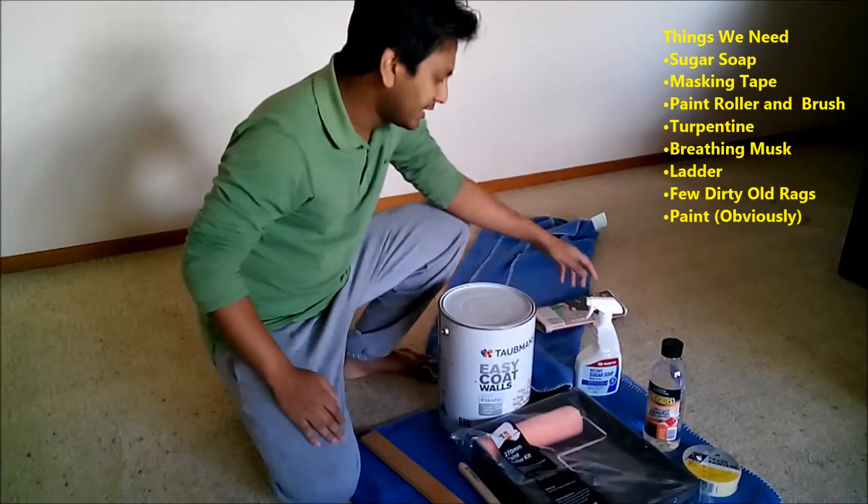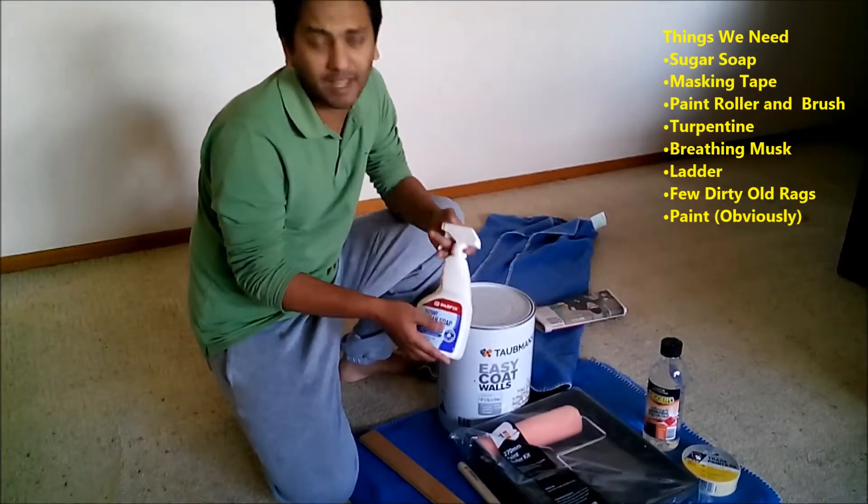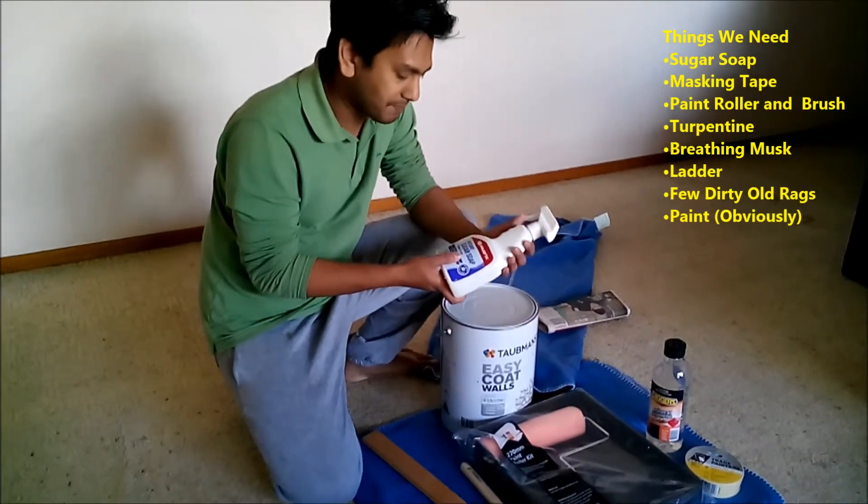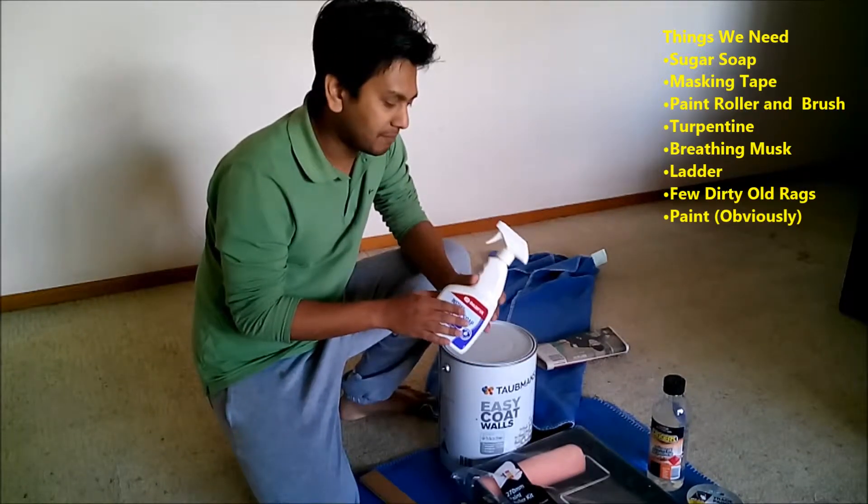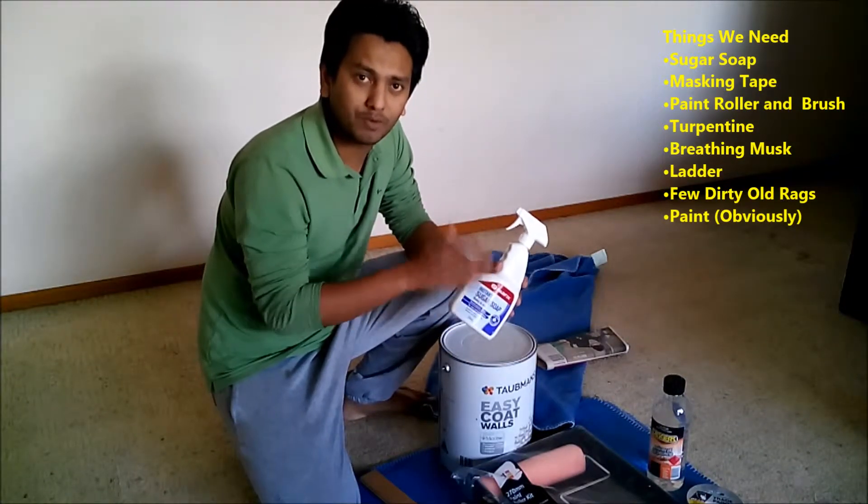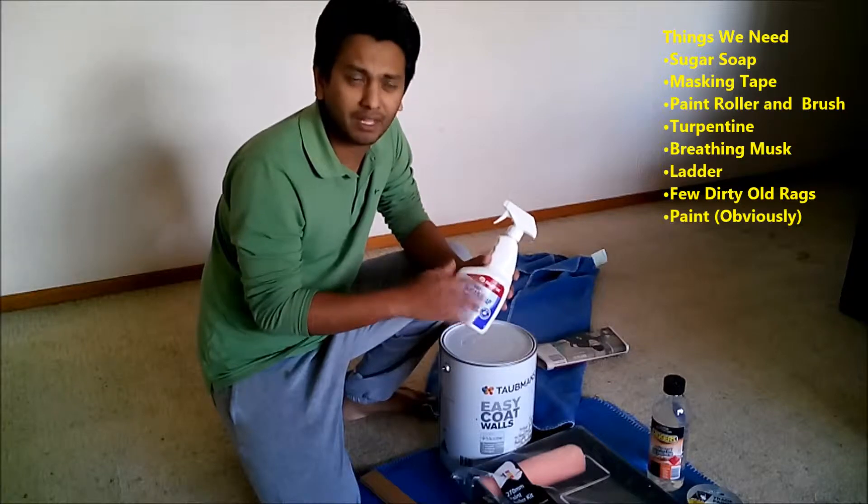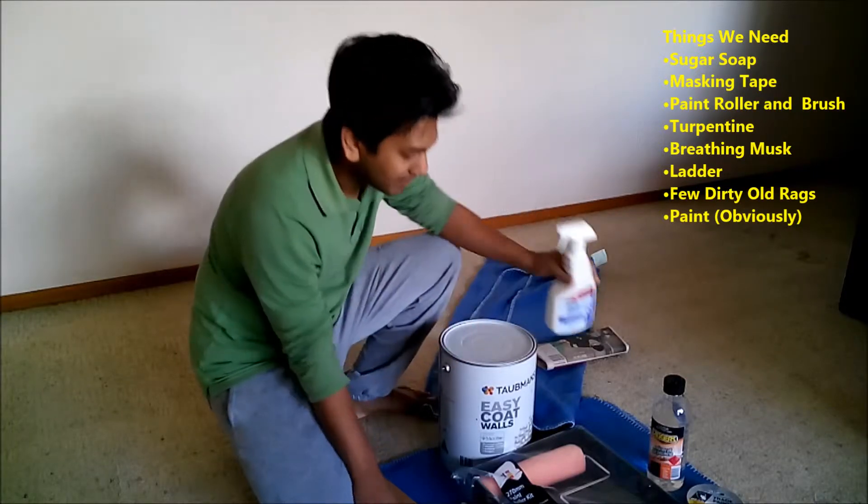The first thing we'll need is instant, you can buy a pre-mixed sugar soap. So basically, it'll just clean off the wall before you start painting it. If there's any grease or anything on the wall, it'll clean it up.